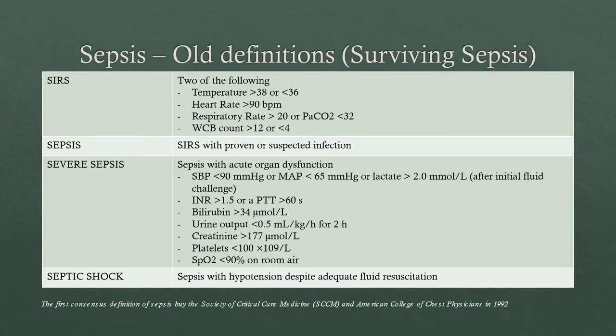Just talking about some definitions — these are probably terms you've heard, and there's a bit of a mix-up around them, but this should clear things up. The Society of Critical Care Medicine and the American College of Chest Physicians in 1992 initially came up with these definitions, and they were used in the surviving sepsis campaigns. They divided it up into SIRS, sepsis, severe sepsis, and then septic shock.